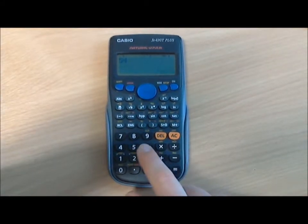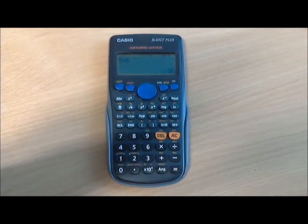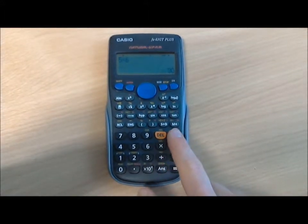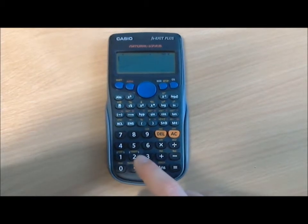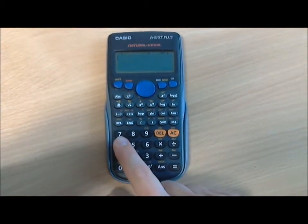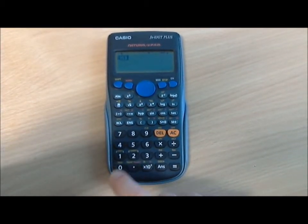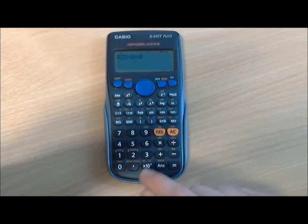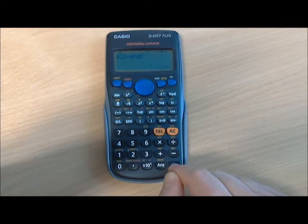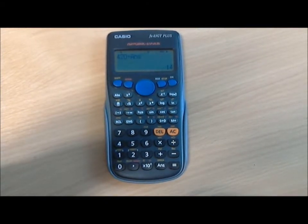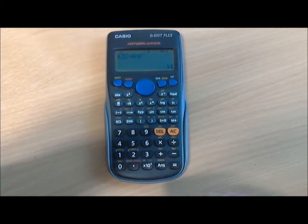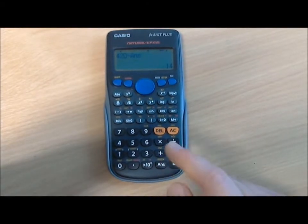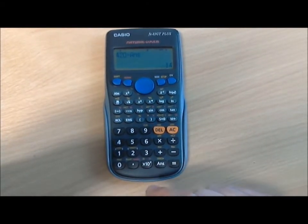If we want to divide a number by 30, instead of having to type in 30 again, say we have the number 420, if we click divide by answer, it will divide it by 30. Hit equals and we get 14. So the ANS button is very useful whenever you have a number you've just calculated and you want to use it in a subsequent calculation.